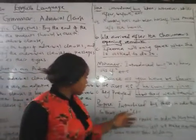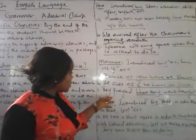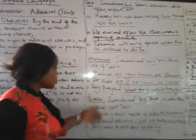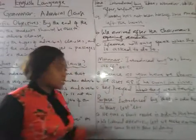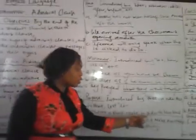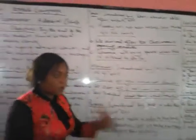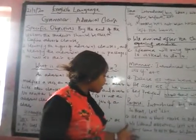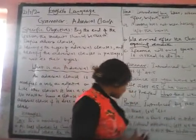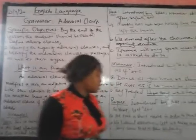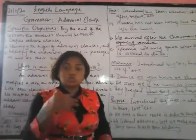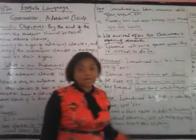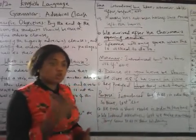Purpose, which is introduced by 'that,' 'so that,' 'in order to,' and so on. Example: 'He took a short cut in order to save time.' The purpose for taking the short cut is in order to save time. Another: 'We listened attentively lest we make a mistake.' The purpose for listening attentively is so that we do not make a mistake. 'Journey came to us to show solidarity' — the purpose for coming is to show solidarity.